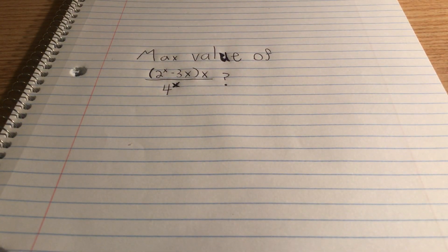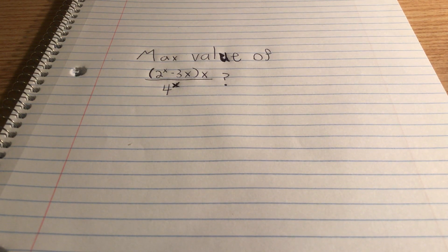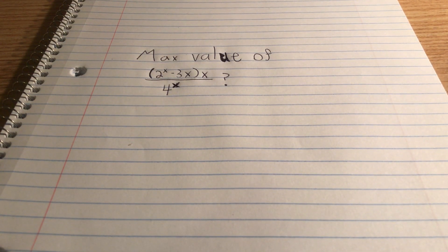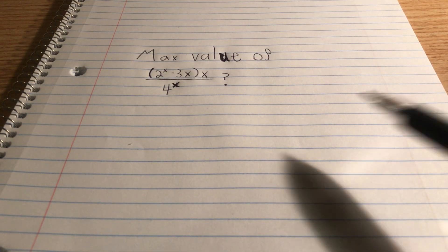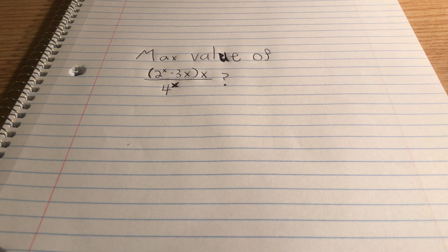Booyah. What is the maximum value of this scary-looking function here? 2 to the power of x minus 3x, all times x, and all of that divided by 4 to the power of x. My, oh my, where do we even start here? Okay, we cannot use the vertex formula for this. Negative b over 2a, how do we correlate y equals ax squared plus bx plus c to this value? We can't, so we have to find some other way to solve this.